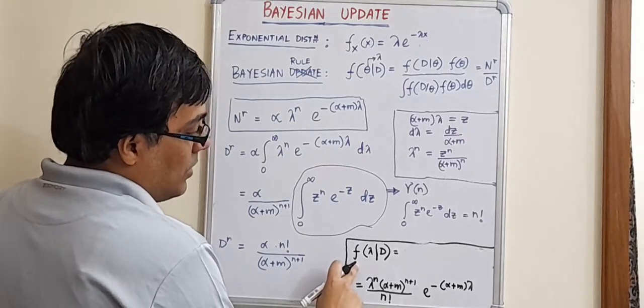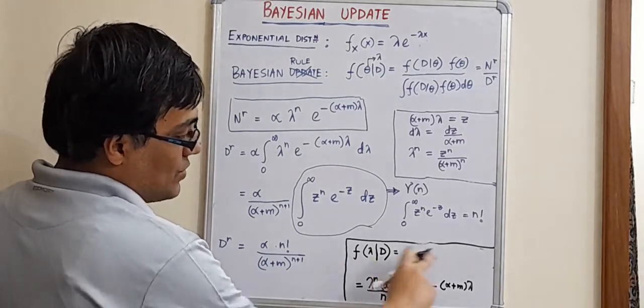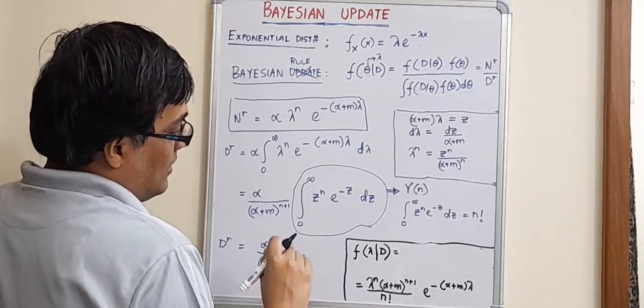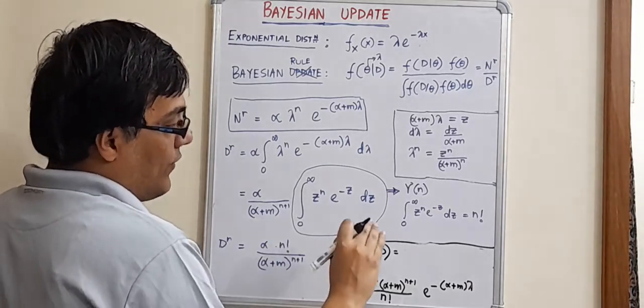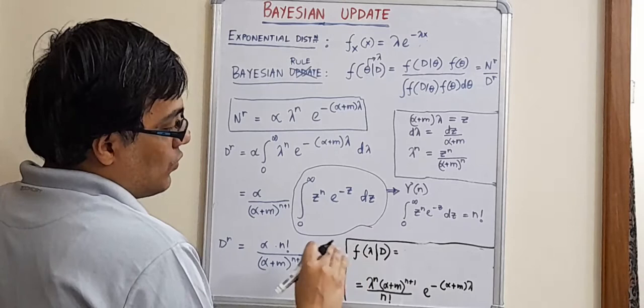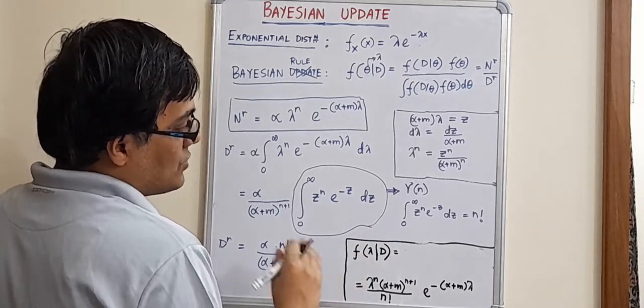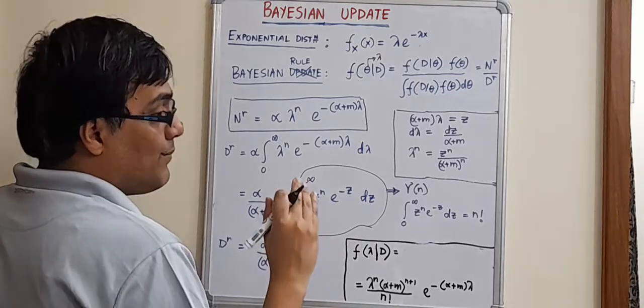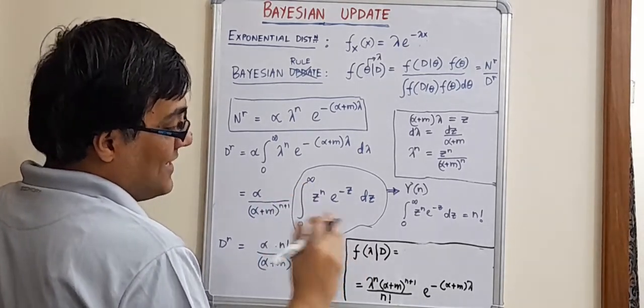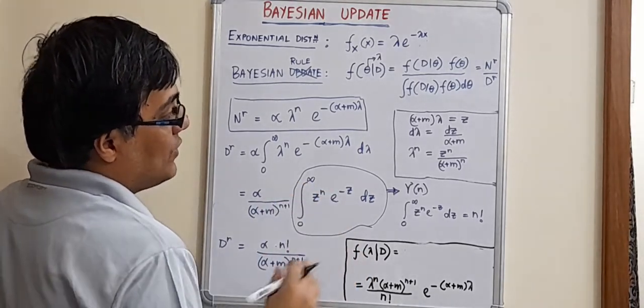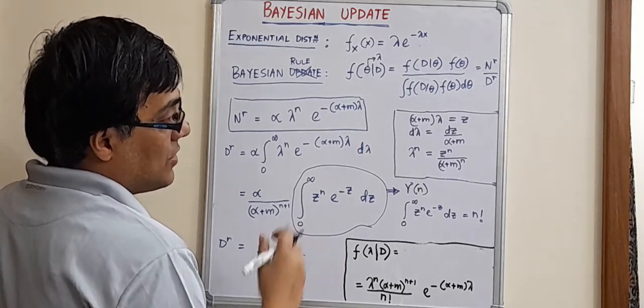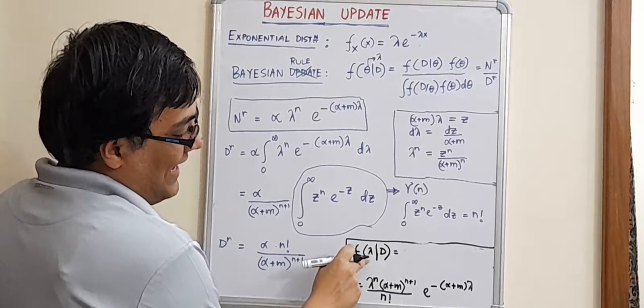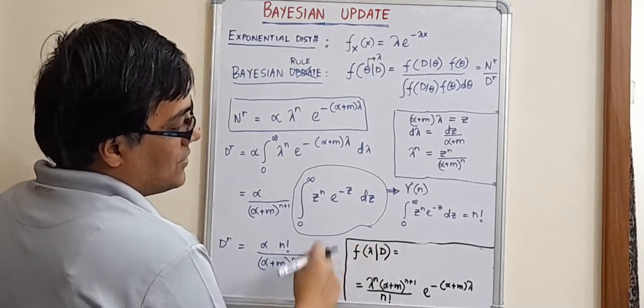This is what the Bayes rule or the Bayes theorem gives us. As you can see, it is a pretty messy looking expression and looking at this expression, it is not obvious that what advantage Bayes rule or Bayes theorem or Bayesian estimation gives us. But for that to see, I have to explain, take you to the next lecture or next slides where I will be able to make an estimate of lambda based on this posterior density.